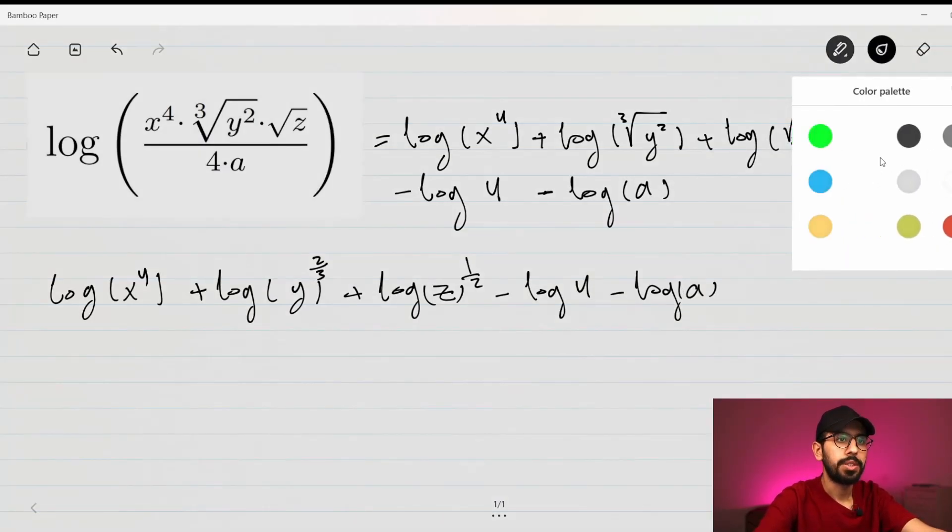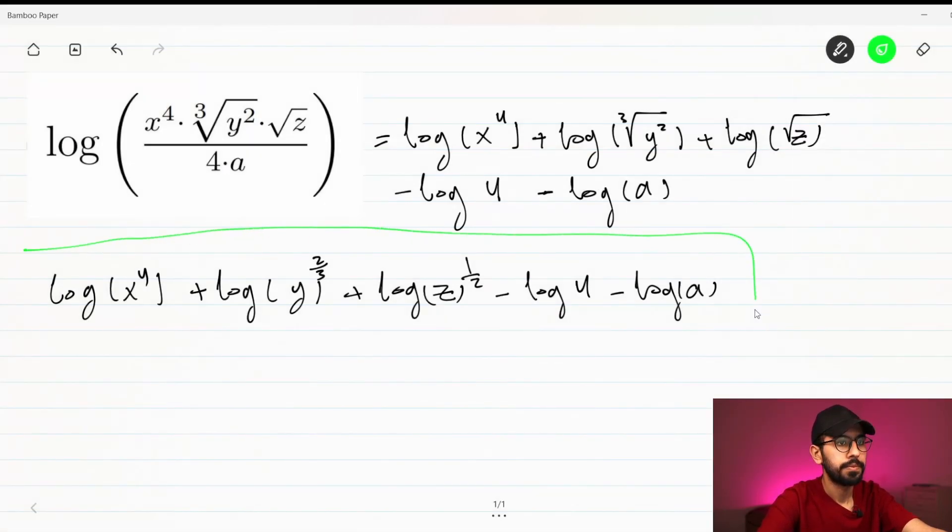Now we need to use the third rule of logarithm, which is that when we have an exponent, we can move it to the place of the coefficient of the log.